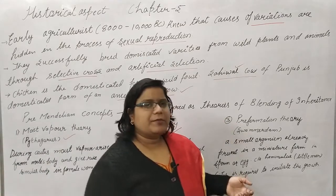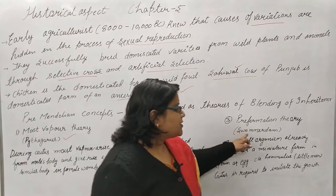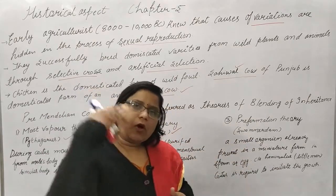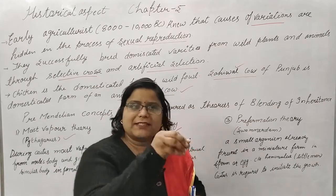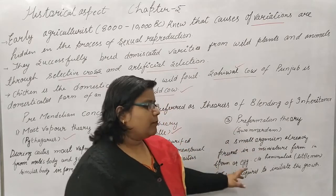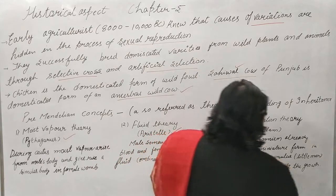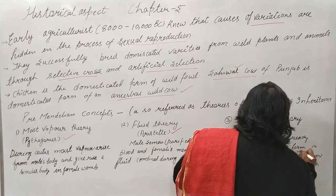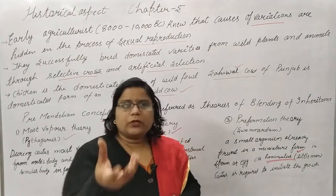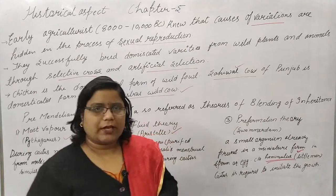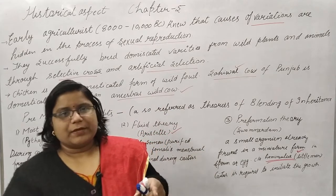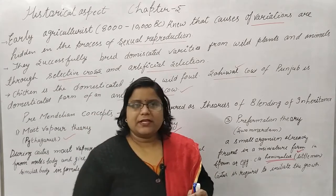Next is the pre-formation theory, given by Swammerdam. He said that the sperm and egg already contain a small living system in miniature form, called the homunculus — meaning 'little man.' This homunculus starts to grow when coitus occurs; coitus is only required to initiate the growth of that little person. This theory is also wrong.